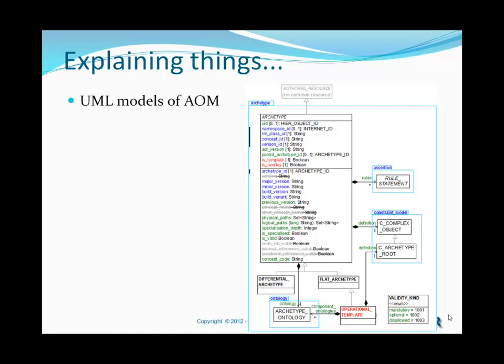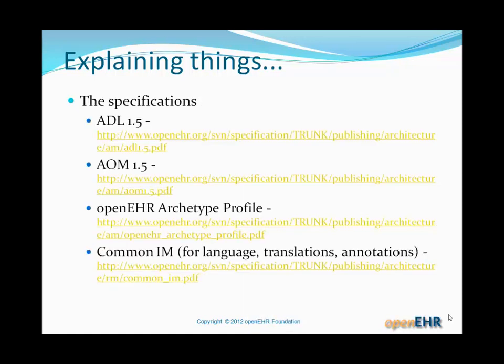Obviously these models aren't simple and there's a lot of software engineering detail implicated, which is beyond the scope of this course. There are the specifications — the URLs of the current drafts are: ADL 1.5, AOM 1.5, a minor additional specification called the OpenAHR archetype profile, and lastly the common information model, which contains a lot of common patterns used in OpenAHR. Some of those patterns are used in archetypes — for example, language, translations, and annotations.